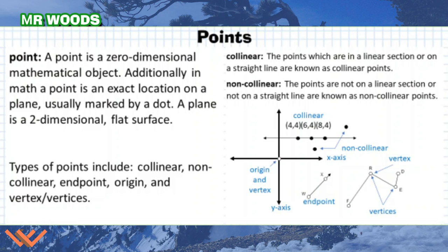Point is a zero-dimensional mathematical object. Additionally, in math, a point is an exact location on a plane, usually marked by a dot. A plane is a two-dimensional flat surface. So if you remember, we're talking about graphing data, doing line graphs and such, and finding those ordered pairs or coordinate pairs. This is going to explain a little bit more for it.